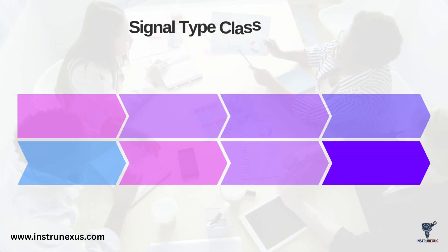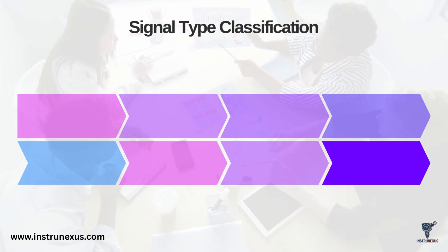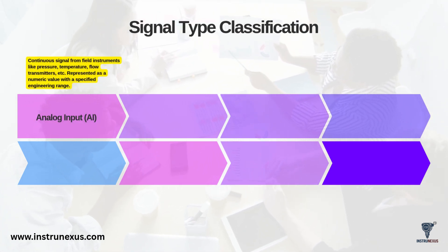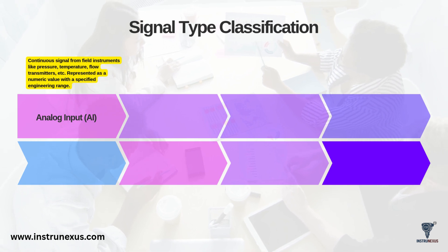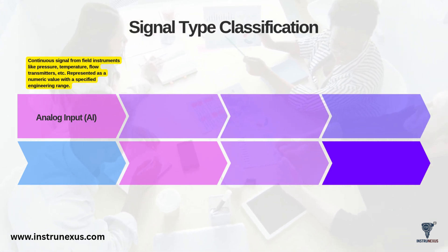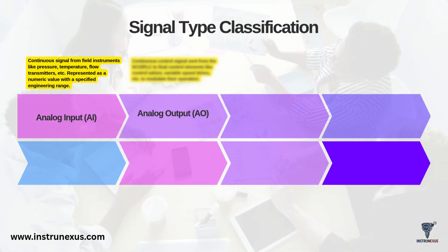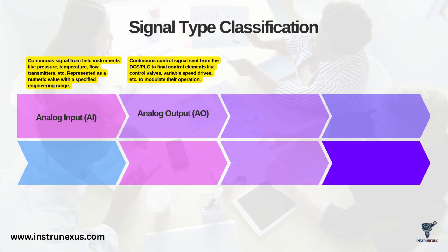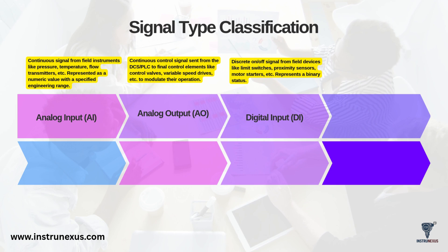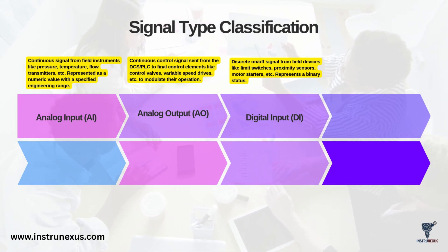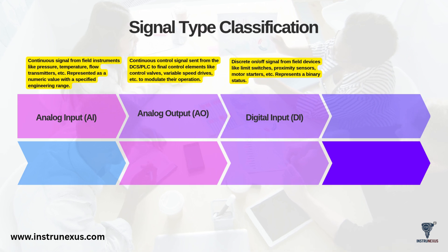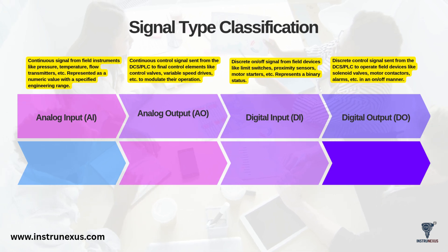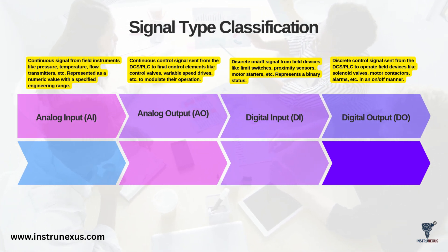Let's dig deeper into signal type, as it's the most fundamental classification. The four most common types are: analog input (AI) – a continuous signal from the field to the control system, like a pressure or temperature transmitter; analog output (AO) – a continuous signal from the control system to the field, used to modulate a device like a control valve; digital input (DI) – a simple on-off status signal from the field, like a limit switch or a motor run status; and digital output (DO) – a simple on-off command from the control system, used to operate a solenoid valve or start a motor contactor.